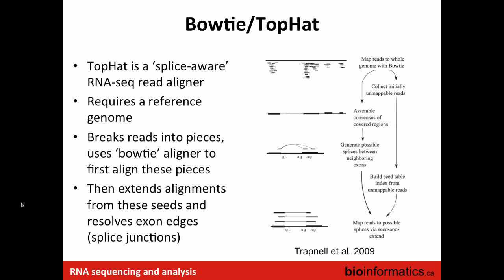Bowtie and TopHat together form a splice-aware aligner and splice junction detector package. Bowtie is the backbone aligner — it's great at aligning short reads. However, Bowtie cannot deal with very large gaps, those are the intronic gaps. That's why TopHat works like a wrapper: it uses Bowtie as an aligner and takes all that alignment information to piece it together and create the splice junctions.